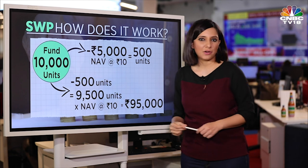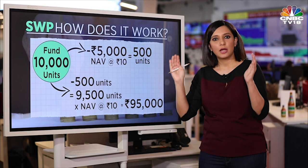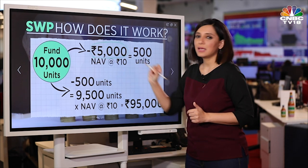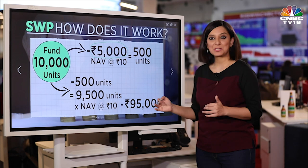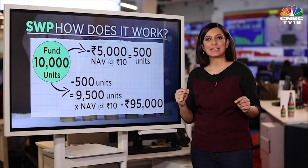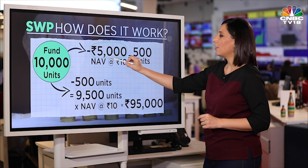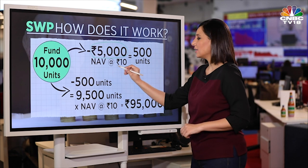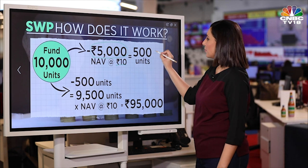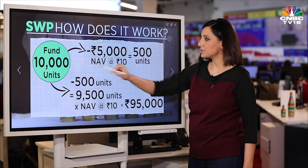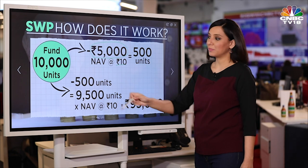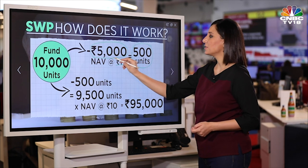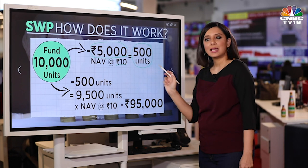Let's get started with an example. Suppose at the beginning you have 10,000 units — this is your corpus to begin with. Now you have decided that every month you want 5,000 rupees as an income. I'm choosing round numbers for simplicity so it's easily understood. So you want to take out 5,000 rupees every month. Suppose the first month the NAV is 10 rupees. So 5,000 divided by 10 gives you 500 units going out.